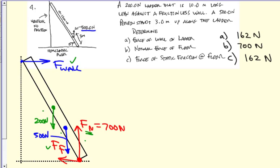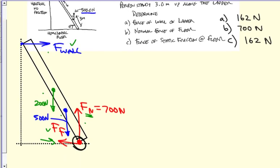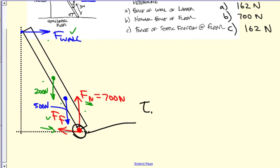The f net y direction is equal to zero. So the 200 plus the 500 cancel with the 700 that we just figured out. Now we don't know what this is. And we don't know what the wall is. But we do see that they're the only horizontal forces. So they need to be equal in size but opposite in direction. So let's, if we choose, and this is typically what we do for a ladder problem, is we're going to choose this spot where the bottom of the ladder is in contact with the ground.